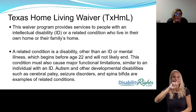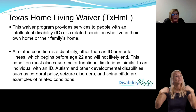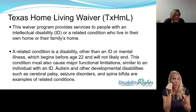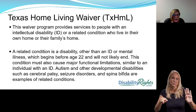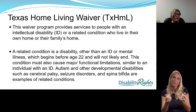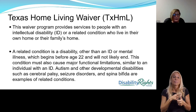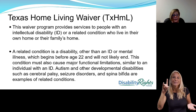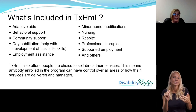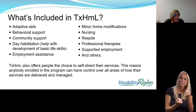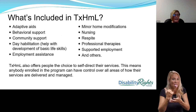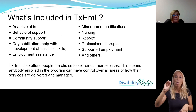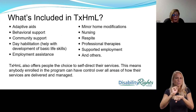The next waiver is the Texas Home Living waiver. This waiver program provides services to people with an intellectual disability or a related condition who live in their own home or in their family's home. A related condition is a disability that occurred before the age of 22 that will not likely end and will affect three of the major life areas. Examples include autism, cerebral palsy, seizure disorders, and spina bifida. Included in the Texas Home Living waiver: adaptive aids, behavioral support, community support, day habilitation, employment assistance, minor home modifications, nursing, respite, professional therapy such as OT, PT, and speech, supported employment, and other services. Texas Home Living also offers the choice to self-direct services.